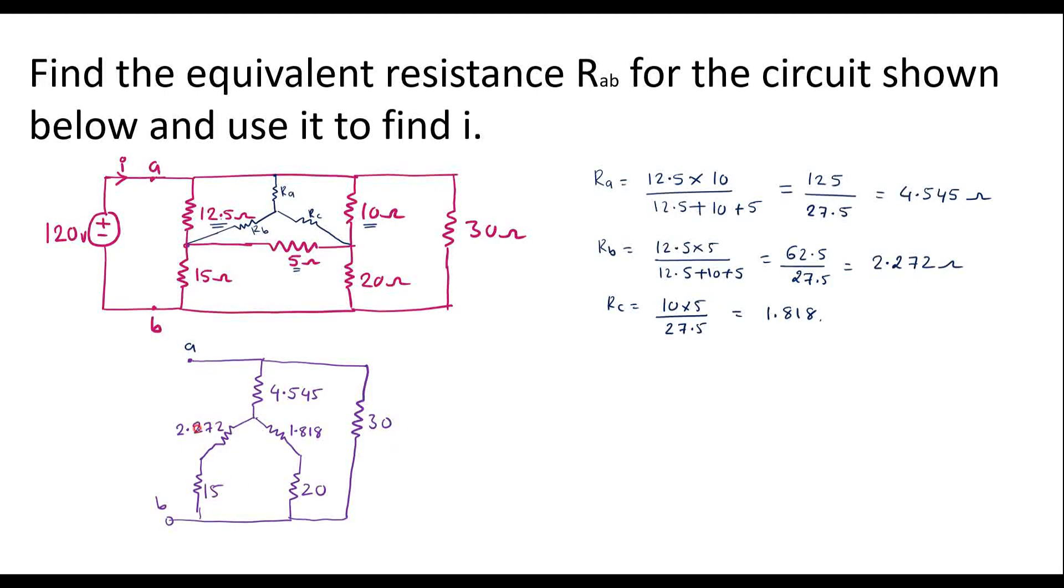So now here we can see that 15 and 2.272 are in series. I will further reduce this circuit as 4.545 ohm. So here we have 15 plus 2.272, that is 17.272 ohm. And here we have 20 plus 1.818, that is 21.818 ohm. This is B terminal, this is A terminal, and here we have 30 ohm resistor.